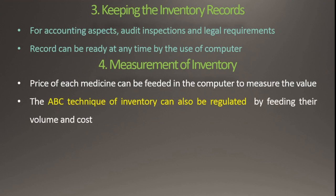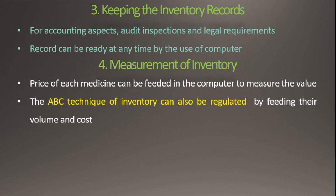After receiving the medicines from the supplier, you must feed that particular quantity with the price in the computer. The ABC analysis or ABC technique inventory can also be regulated by feeding their volume and cost. ABC stands for Always Better Control. The A class contains high-cost medicines, B class contains medium-cost medicines, and C category contains low-cost medicines. So the inventory can be monitored by using these categories — high cost medicine, medium cost medicine, and low cost medicine.